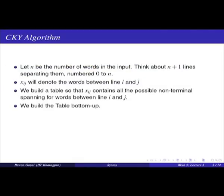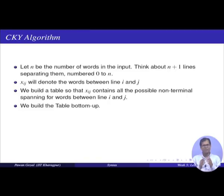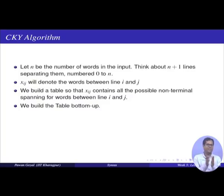The idea is this: take a sentence with n words. Think about n+1 lines separating them, starting from 0 to n. Any x_ij will denote words between line i and j. You will build up a table such that any x_ij will contain all the possible non-terminals that can derive words between lines i and j. You do that bottom-up.